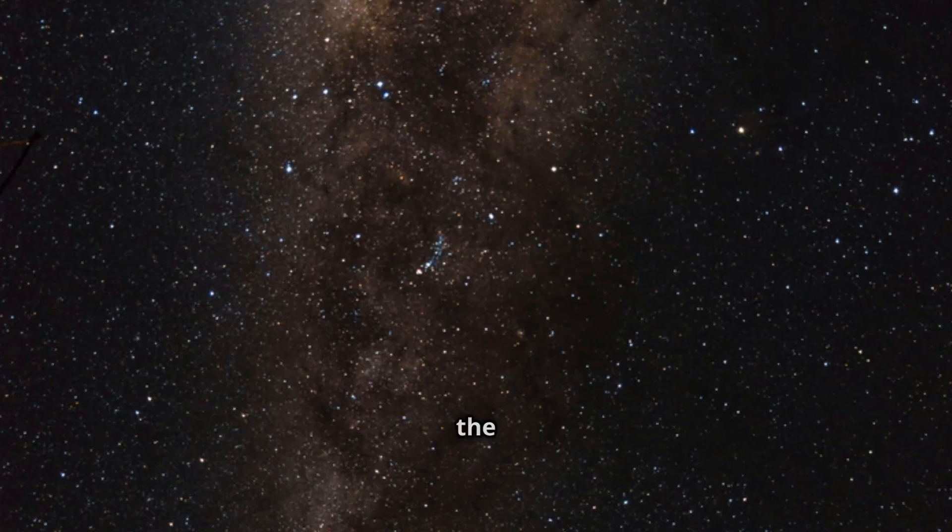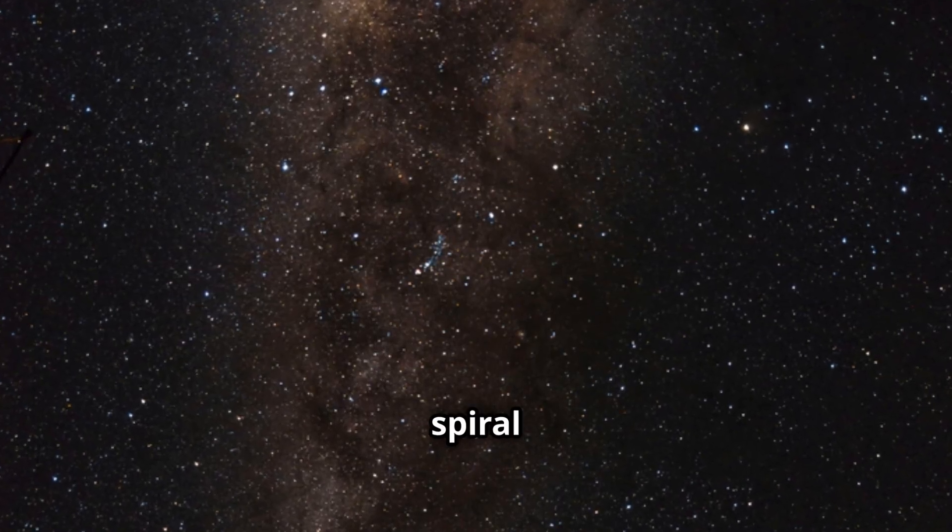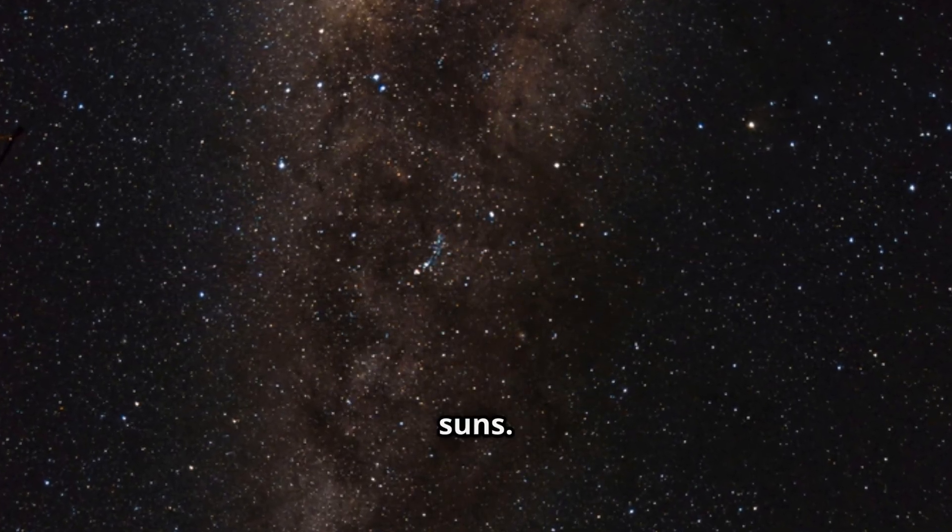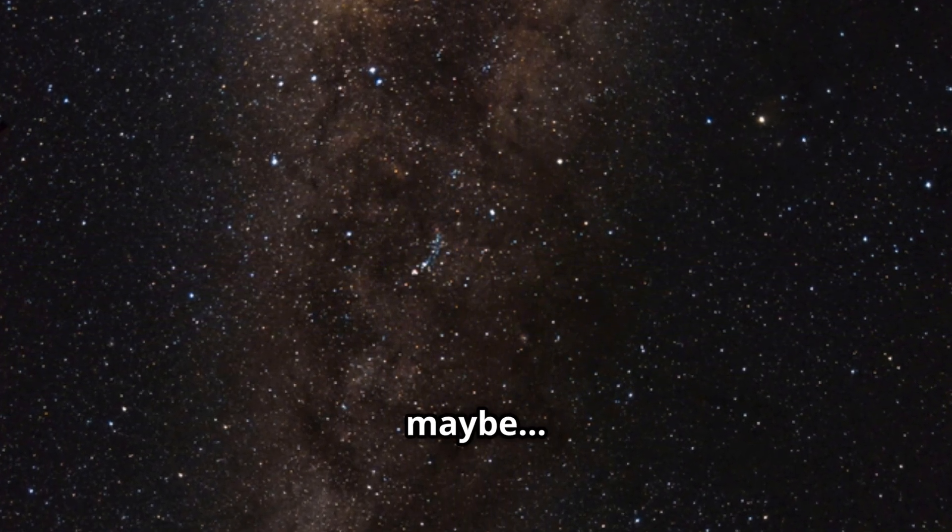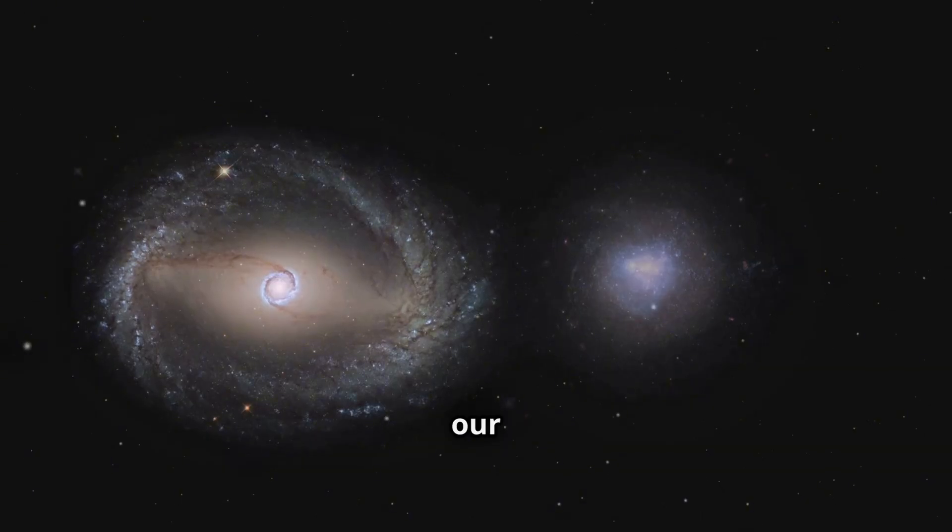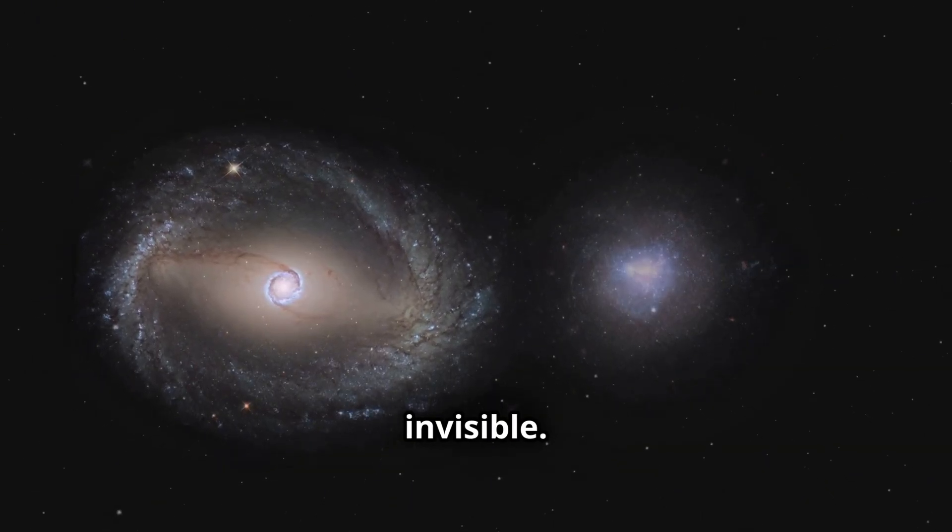Pull back farther and the Milky Way appears. A spiral of 400 billion suns. Each one with worlds, moons, storms, and maybe watchers. Yet from this view, our entire solar system is invisible.